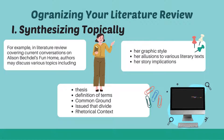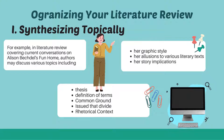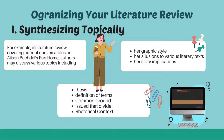How to organize your literature review. Number one: synthesizing topically. Some assignments require discussing your sources together in paragraphs, organized according to shared topics between them. For example, in a literature review covering current conversations on Alison Bechdel's Fun Home, authors may discuss various topics including her graphic style, her allusions to various literary texts, and her stories and publications regarding LGBTQ experiences in 20th century America. In this case, you would cluster your sources on these three topics.